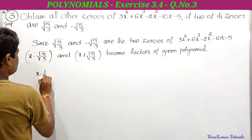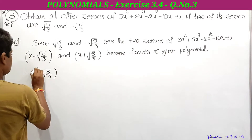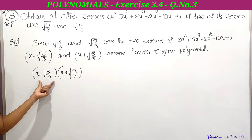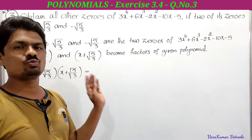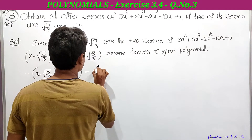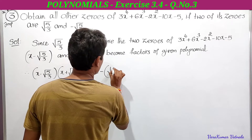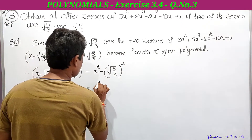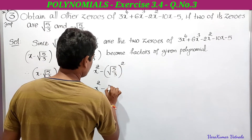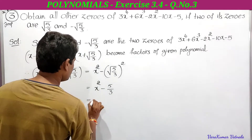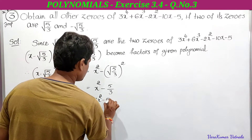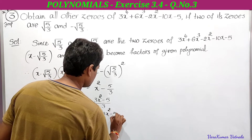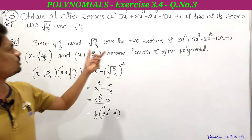Therefore, (x - √(5/3)) × (x + √(5/3)) — using the identity (a - b)(a + b) = a² - b² — gives x² - (√(5/3))² = x² - 5/3. Finding the LCM gives (3x² - 5)/3, which can be written as (1/3) × (3x² - 5). So we need to divide the given polynomial by 3x² - 5.